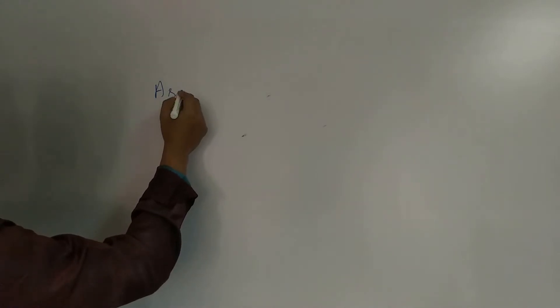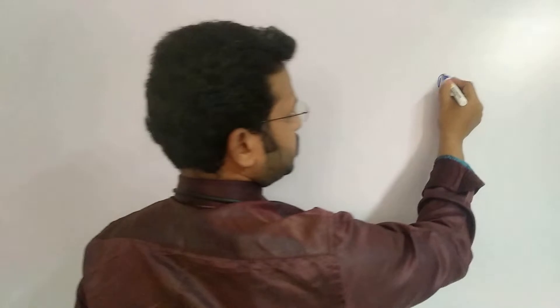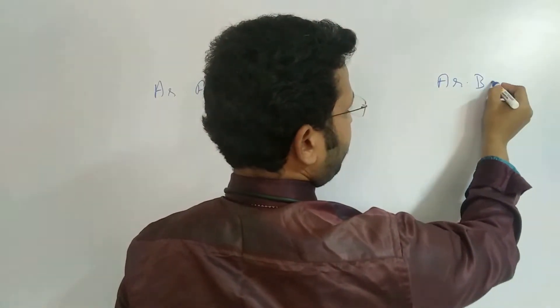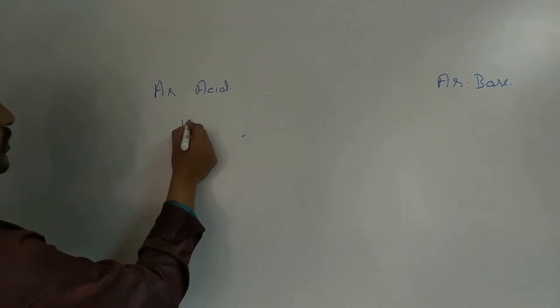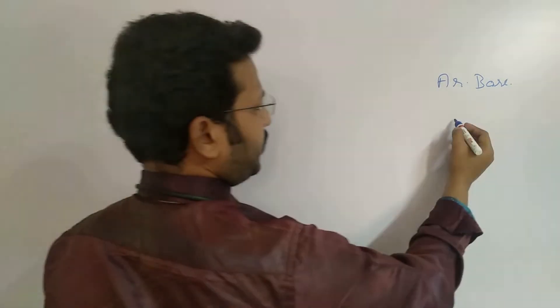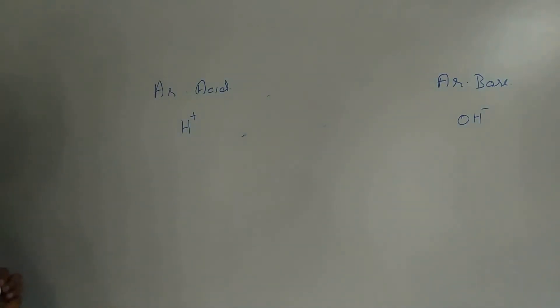Arrhenius Acid and Arrhenius Base. Arrhenius Acid is which donates H plus and Arrhenius Base is a substance which donates OH minus. Here we are having examples.